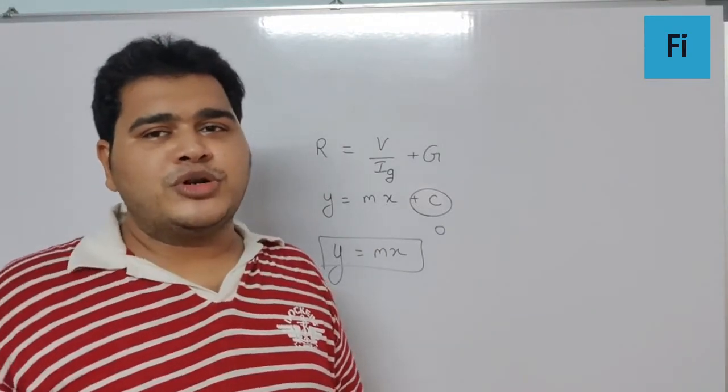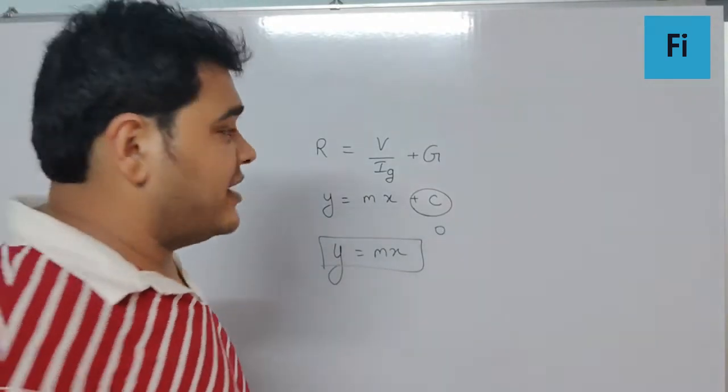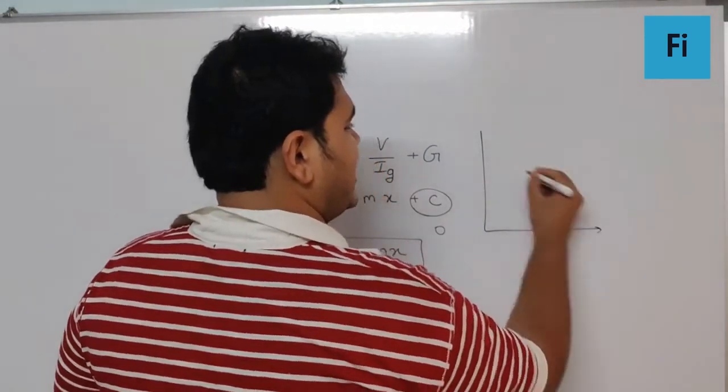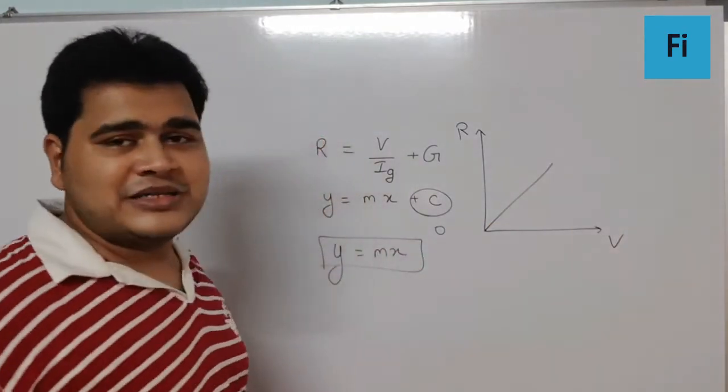And so out of all the graphs I would prefer the graph for this particular question as R versus V, a straight line passing through the origin.